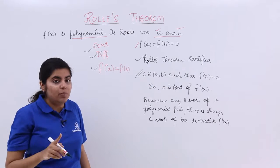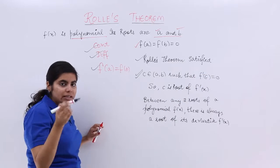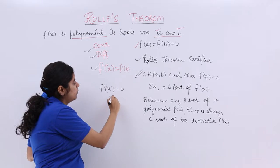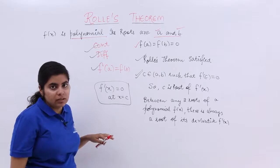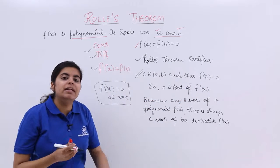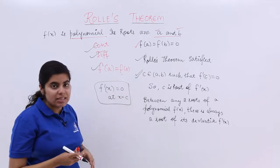Now remember one thing: if f'(c) equals 0, does that not mean that f'(x) is equal to 0 at x equals c? Actually right, because f'(c) equals 0 means that the derivative is 0 at x equals c. So it is the case.